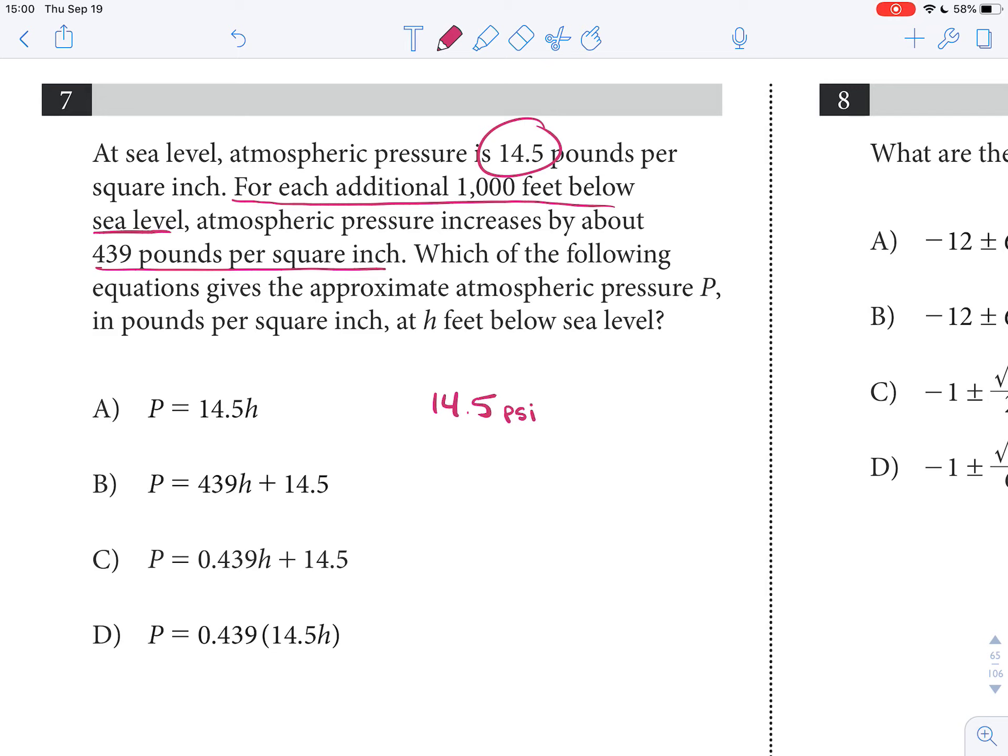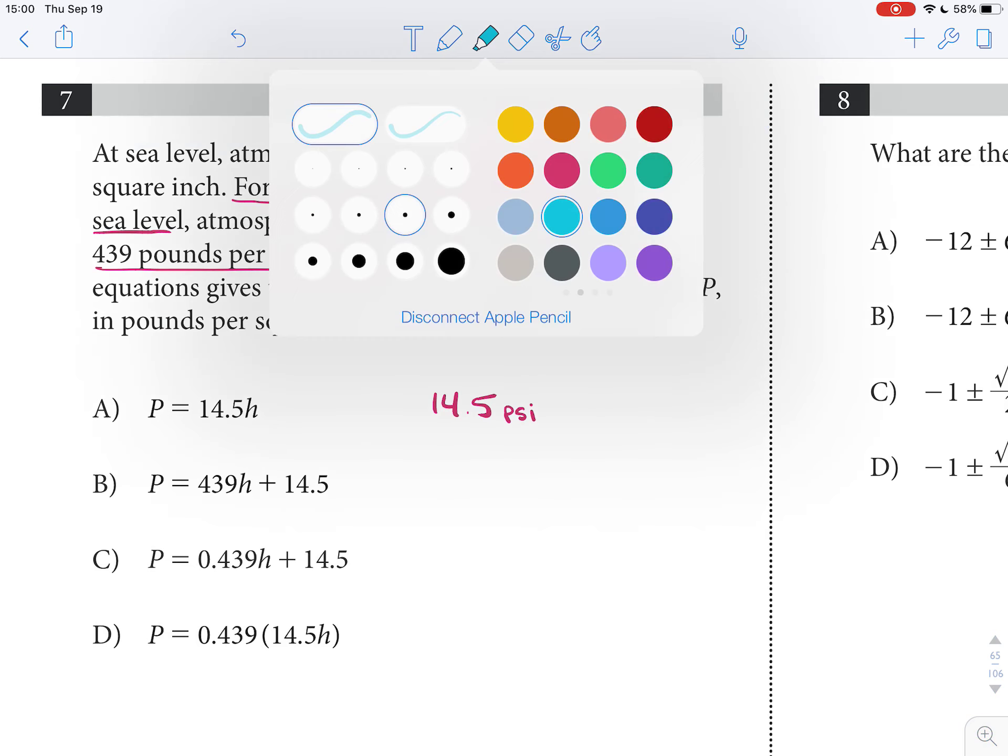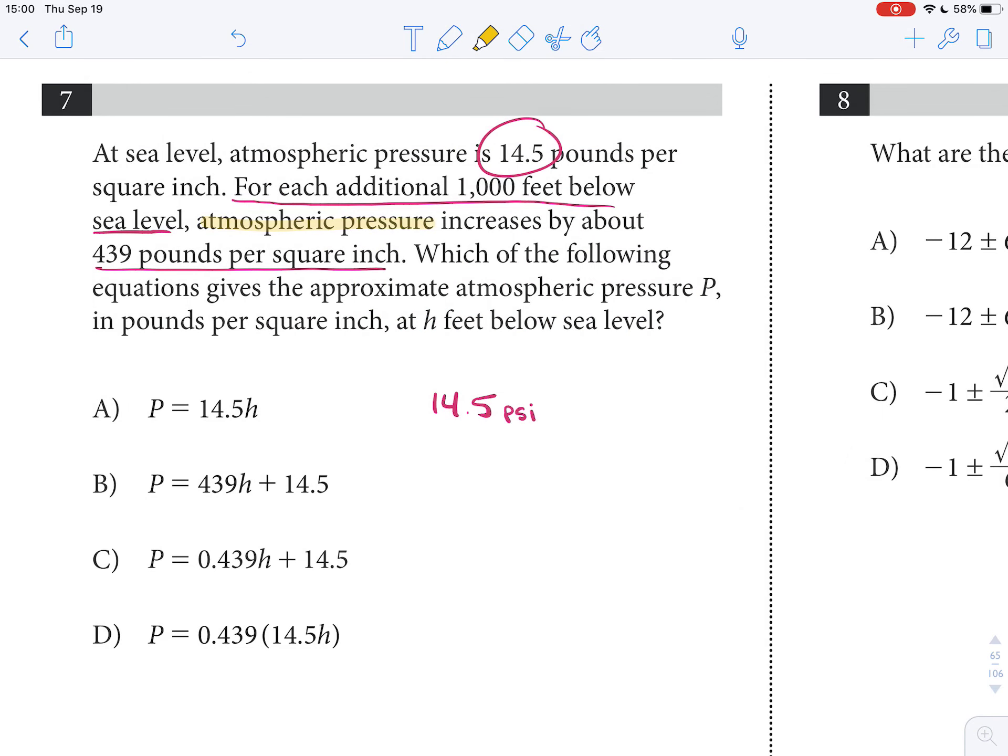But then it tells us that for each additional 1,000 feet below sea level, the atmospheric pressure, and that's the PSI, right? Atmospheric pressure, that's the PSI. That increases by about 439 pounds.